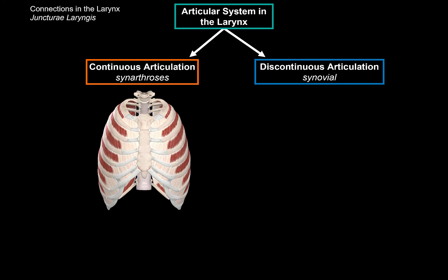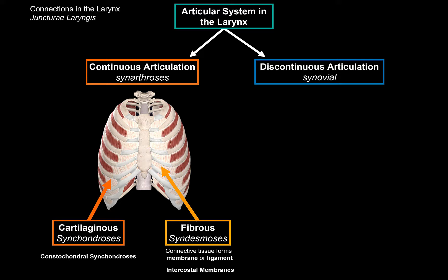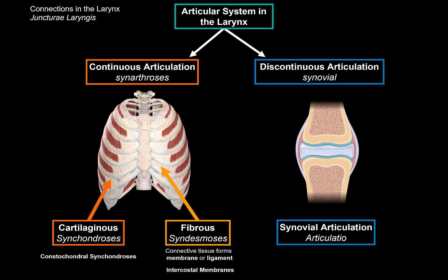One of the connection types is called cartilaginous or synchondrosis, which is where you'll find at the point where the ribs meet the costal cartilage, called the costochondral synchondrosis. The other type of continuous connection in the larynx is a fibrous type, which forms membranes or ligaments. Discontinuous connections are joints. In the larynx, you'll find two synovial joints, which are ligaments forming a sac full of synovial fluid. The larynx has only one cartilaginous connection point, and that is between the corniculate cartilage and the arytenoid cartilage.